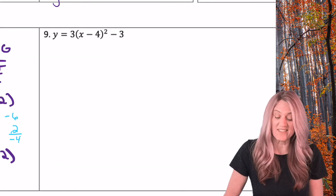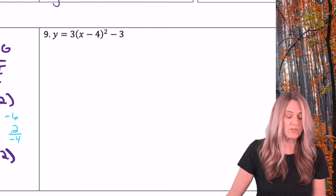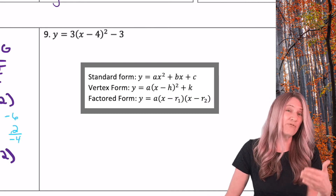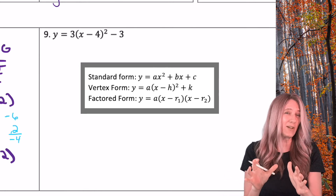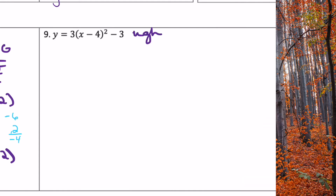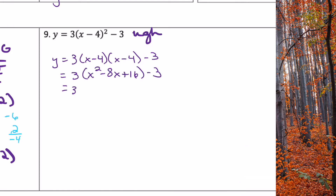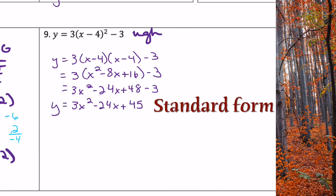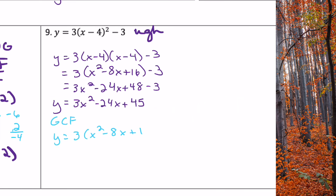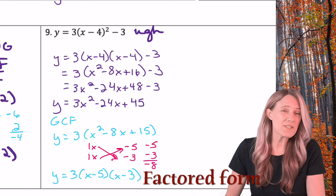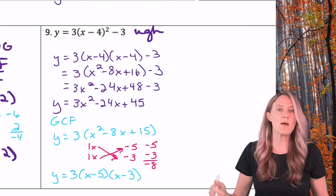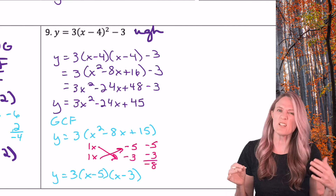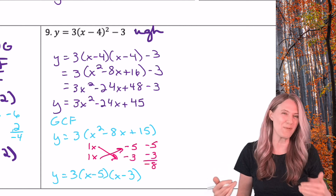Now we're in vertex form and supposed to go to factored form. It's kind of like going vertex to standard, then standard to factored — there's not really an easy way around that. Let's do it in speed mode. That was a little bit of work, but it shows how much math knowledge we have. Remember we want to be efficient though — there's not too often that we need to go from vertex form all the way to factored form.